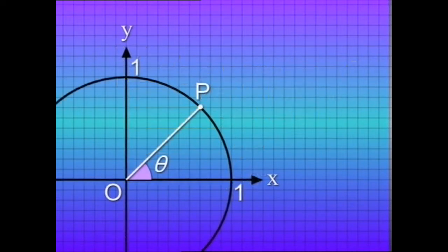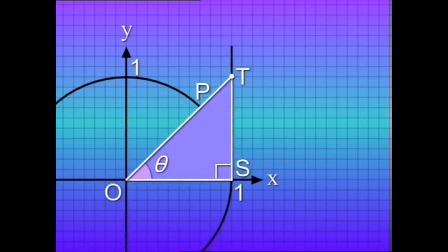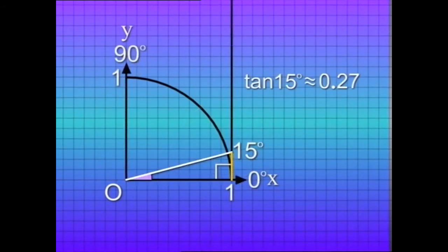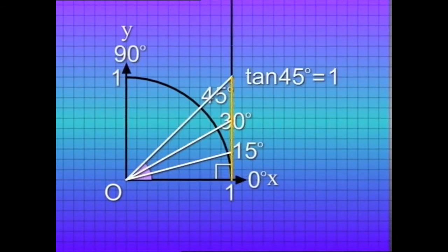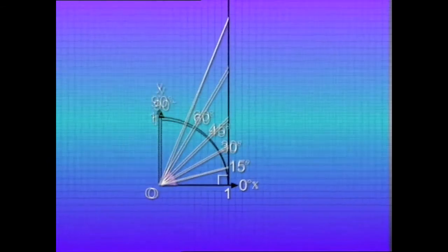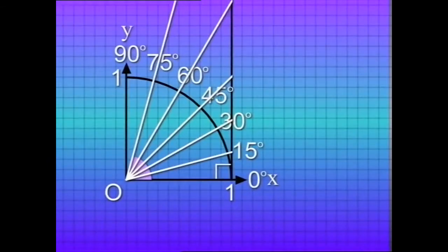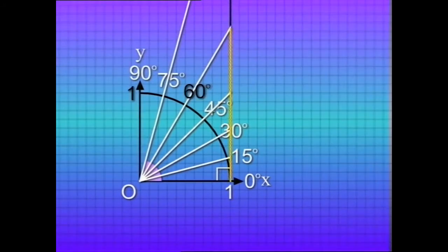For the approximate values of tangent, we draw a vertical line from point S perpendicular to the x-axis, then extend OP to meet the vertical line at T. This gives us right angle triangle OTS. Tangent theta equals the ratio of the opposite side to the adjacent side, which is TS divided by one, so tangent theta equals the y-coordinate of point T. When angle theta increases, tangent theta also increases and may even be greater than one. When theta approaches 90 degrees, the value of tangent theta is very large.